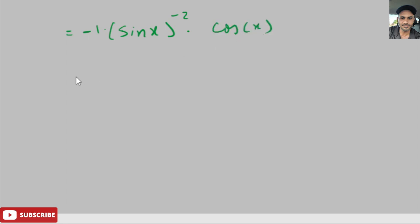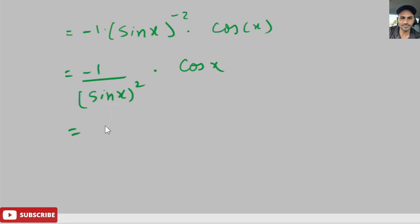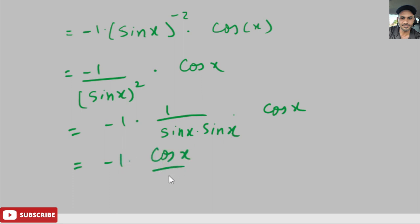This equals negative 1 times cosine of x times sine of x to the negative 2. Bringing sine of x to the negative 2 into the denominator gives us negative cosine x over sine squared x. Expanding sine squared x as sine x times sine x, we get negative 1 times 1 over sine x, times 1 over sine x, times cosine x.